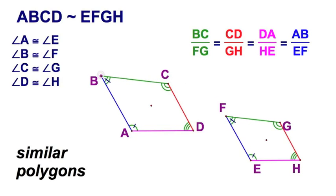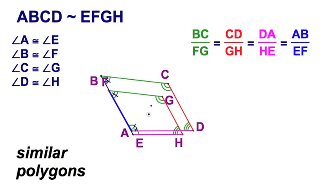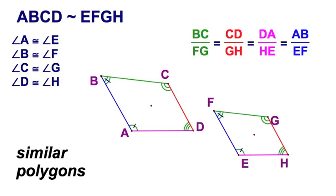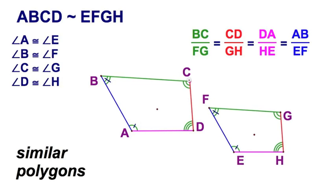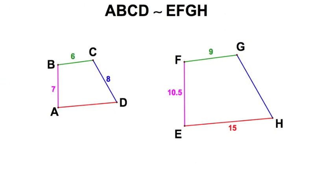Let's visualize this: angle A is congruent to angle E, angle B is congruent to angle F, angle C is congruent to angle G, and H and D are congruent. So four congruent angles - four pairs of congruent angles in this quadrilateral. And now we have something else going on: the ratio of the green to the green is the same as the red to the red as magenta to magenta as blue to the blue. The corresponding sides are proportional.